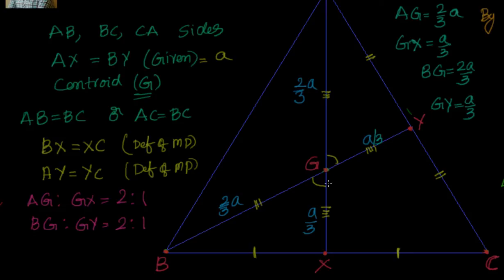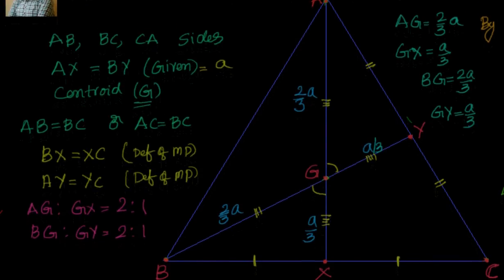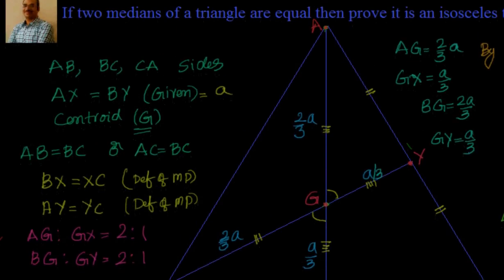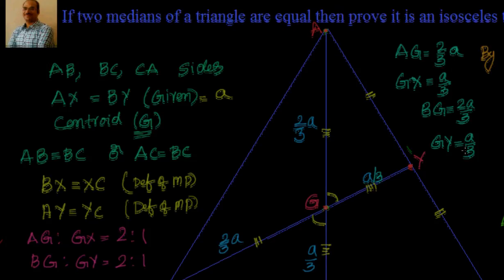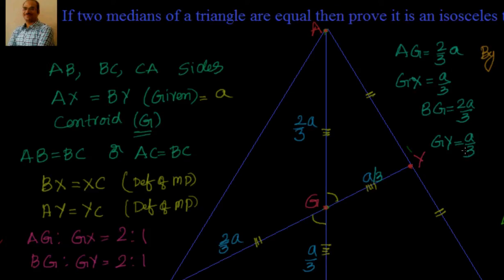So what we can do now is we know we have taken the medians are equal. So we have applied the property of centroid and we have seen that there are 2 congruent triangles with SAS. So by CPCT, BX equal to AY. That tells me that BC equal to AC. That's how we can solve this problem. I will catch you again with one more interesting example. Thanks for your time, bye for now.